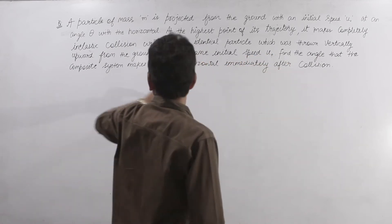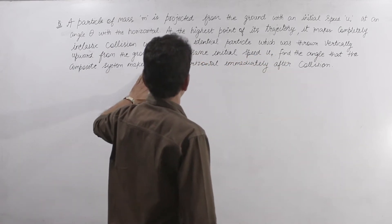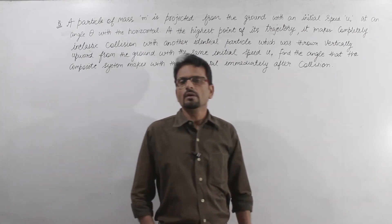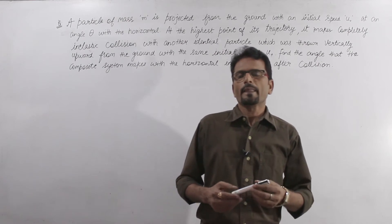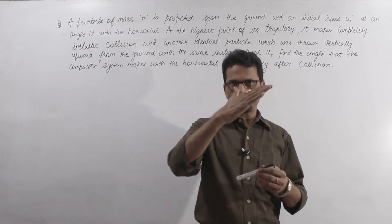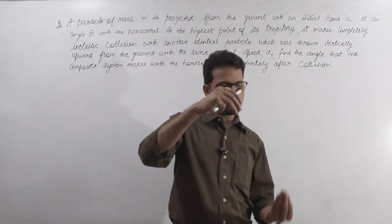Find the angle that the composite system makes with the horizontal immediately after collision. The question is, one particle is thrown at an angle and the other particle is thrown vertically.